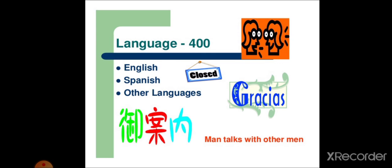After that, man talks with other men. Language. Because language is used for talking to a person. And languages are arranged in this particular category. And the number for this is 400. English, Spanish, other languages, all comes under this category.